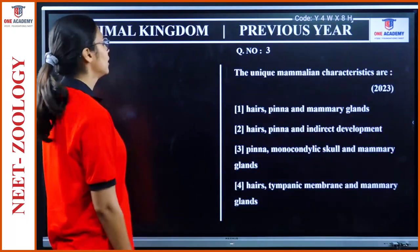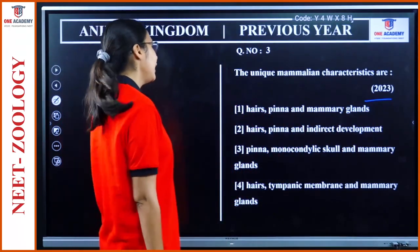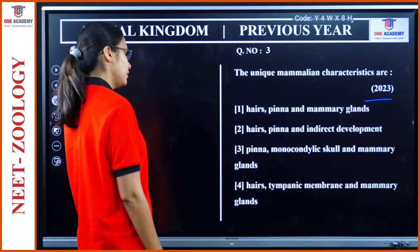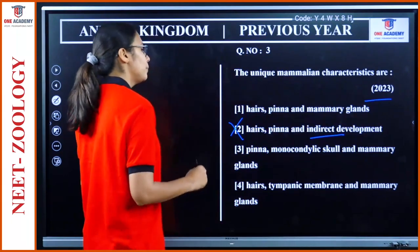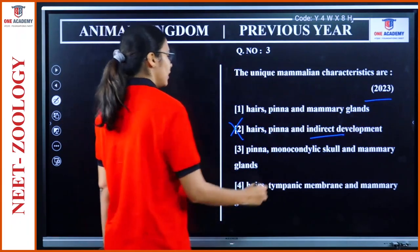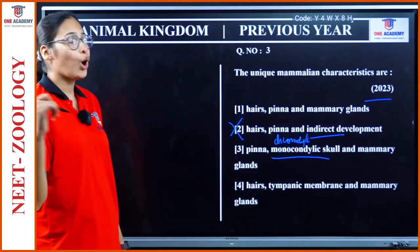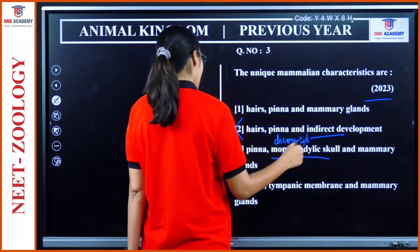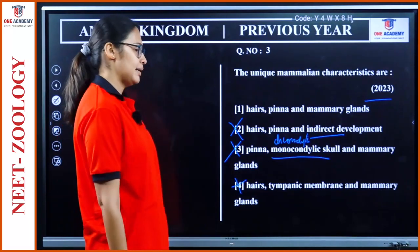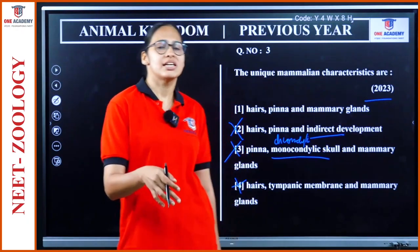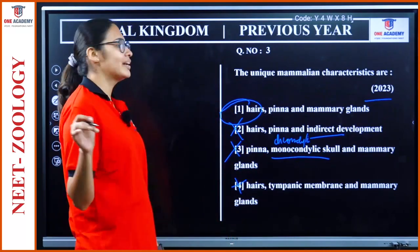Next 2023 question: 'The unique mammalian characteristics are?' Hair, pinna, and mammary glands has a high chance. Option with indirect development is wrong — it is direct development in mammals. Pinna, monocondylic, and mammary gland — it is dicondylic, not monocondylic, so that is wrong. Hair and tympanic membrane — tympanic membrane is seen in amphibia and reptilia too, so it's not unique to mammals. Therefore, option 1 — hair, pinna, and mammary glands — is the correct answer.